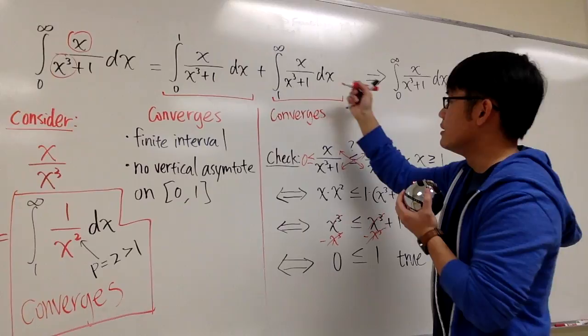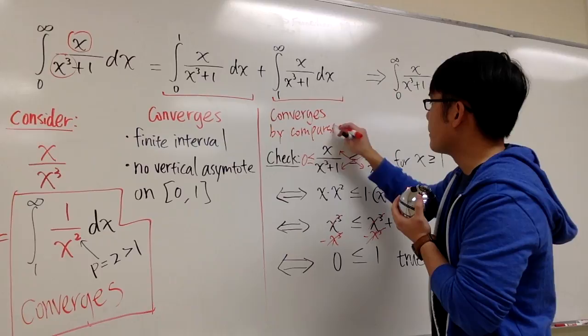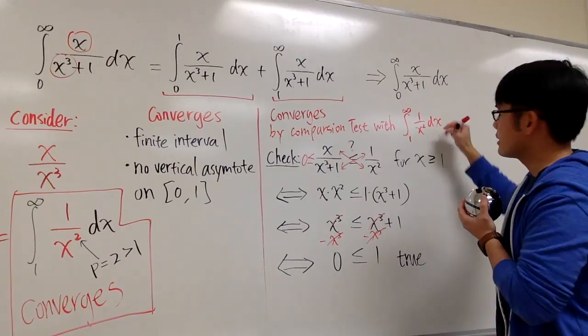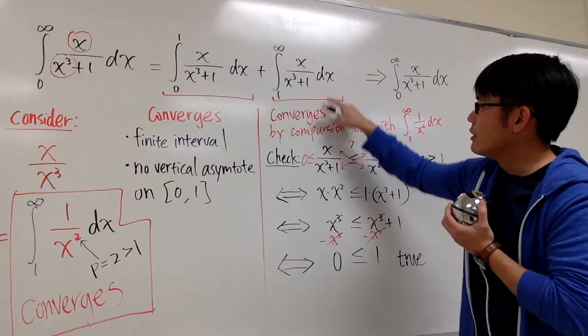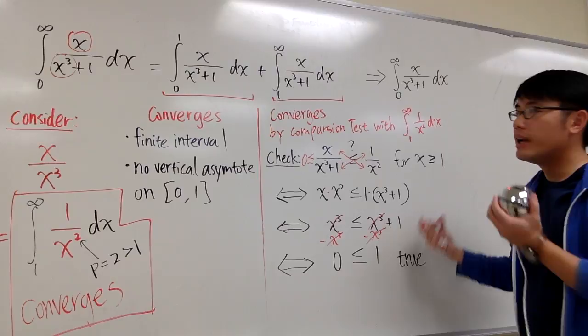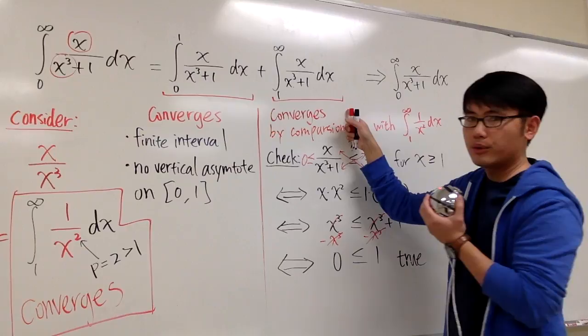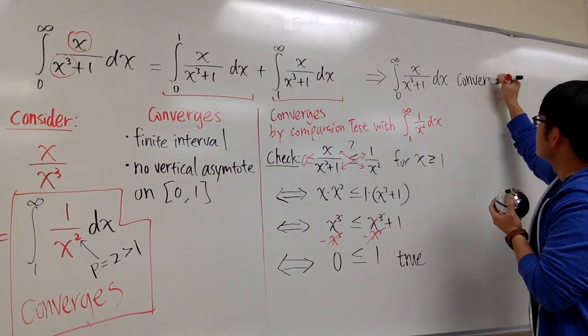So the integral from 1 to infinity of x over x cubed plus 1 dx converges by the comparison test with the integral from 1 to infinity of 1 over x squared dx, which we know to be convergent. Since both pieces — from 0 to 1 and from 1 to infinity — are convergent, finite value plus finite value means the original integral from 0 to infinity also converges.